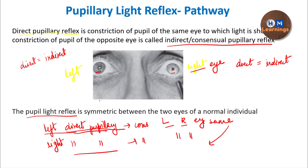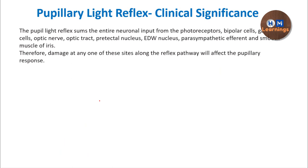Now we can understand the clinical significance. We have seen what is reflex, what is pupillary light reflex, the pathway, and the crucial points. Apart from knowing the physiology, you have to know the procedure also — the adequate stimulus has to be shown to get an adequate response. If you are doing it properly and not getting the response, then you have to think that there could be damage anywhere along the reflex pathway. The possible site of damage is what we can understand from this discussion.